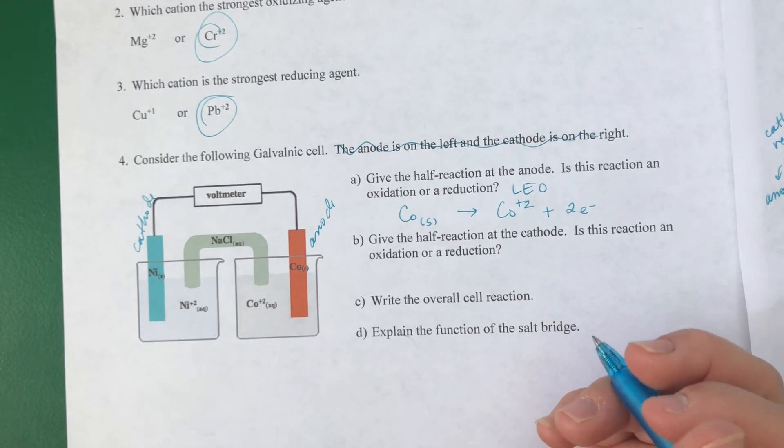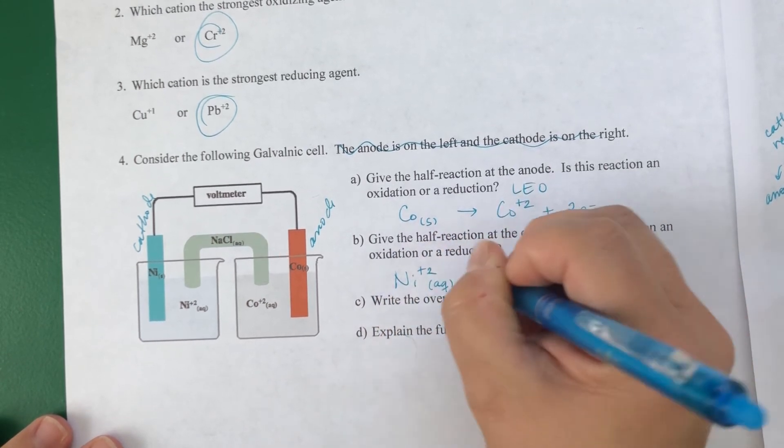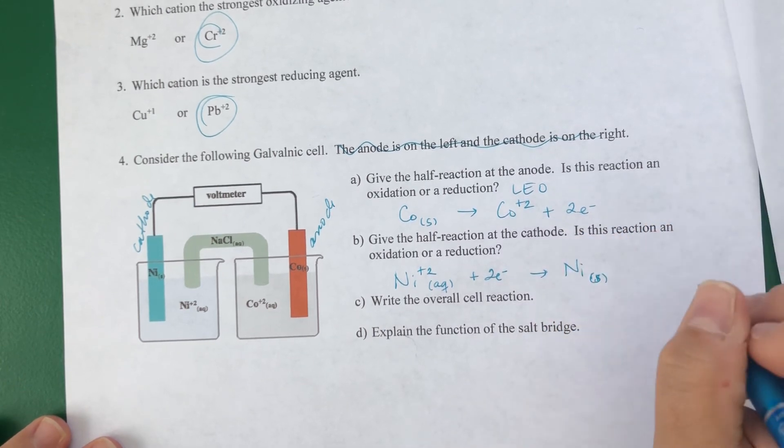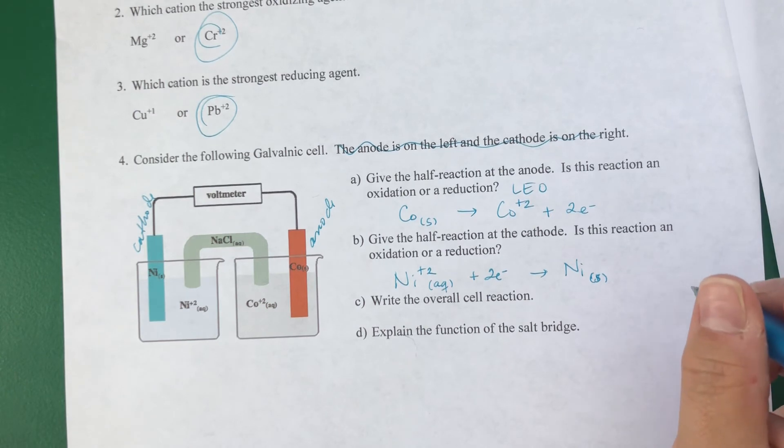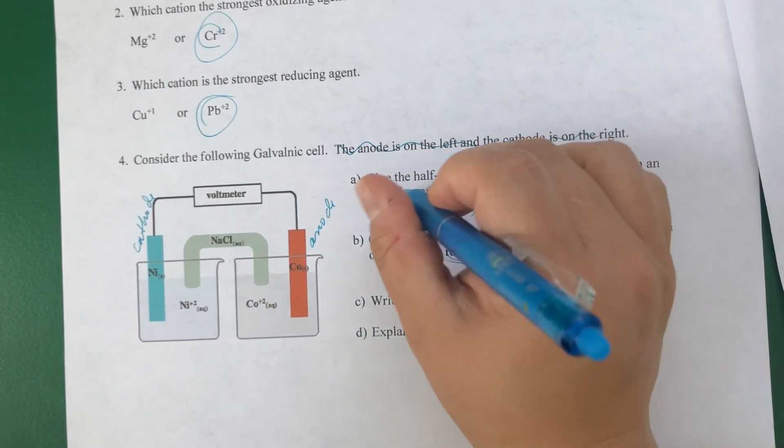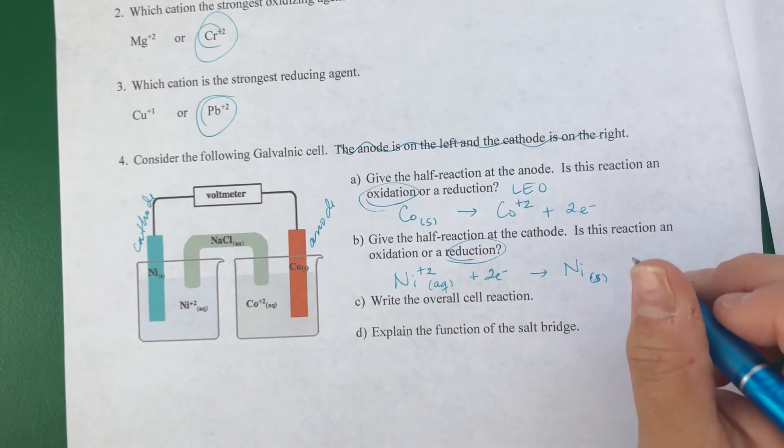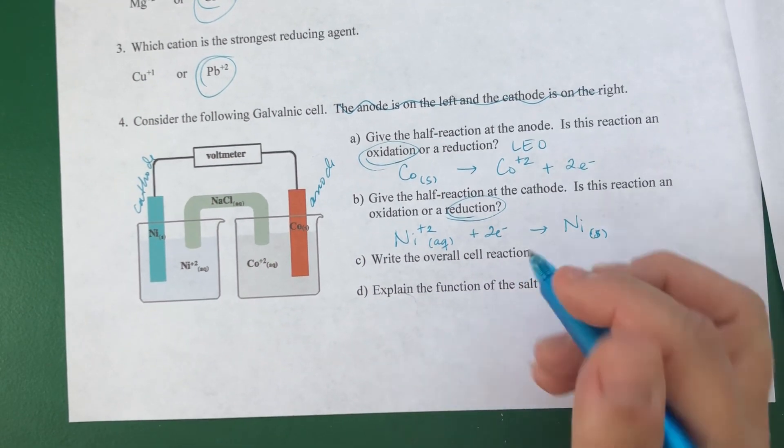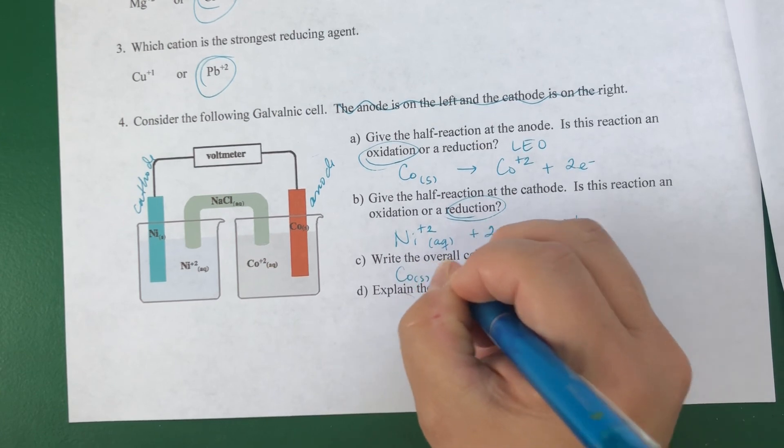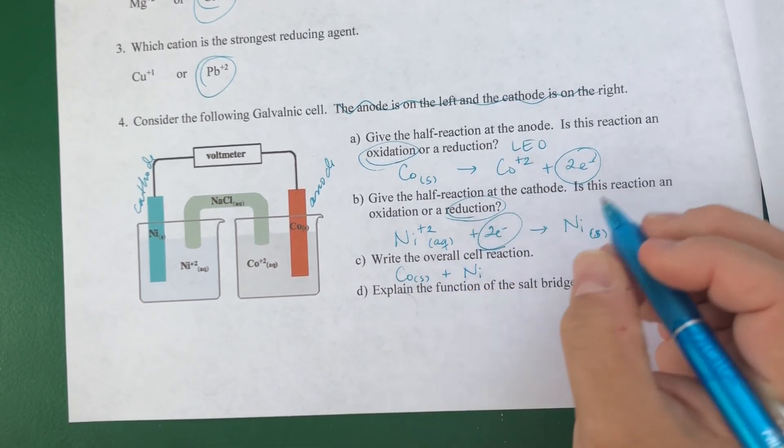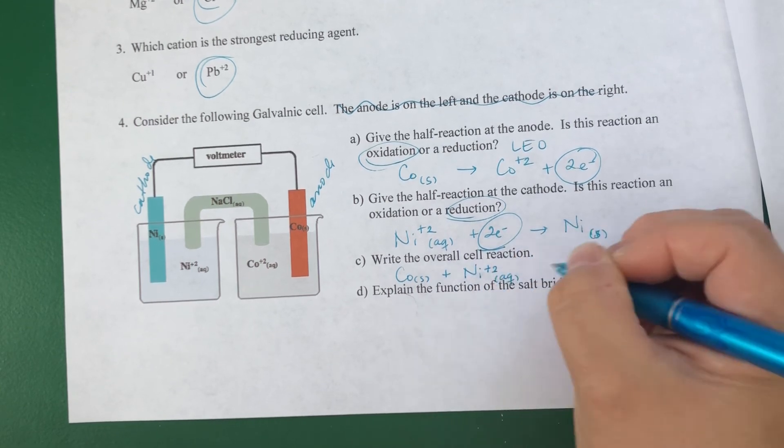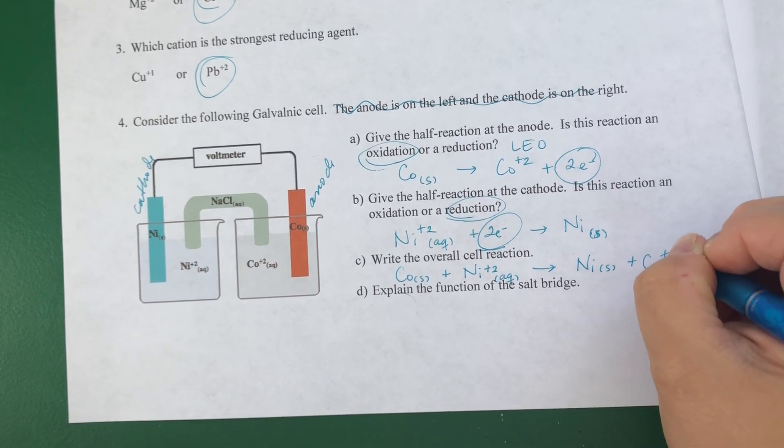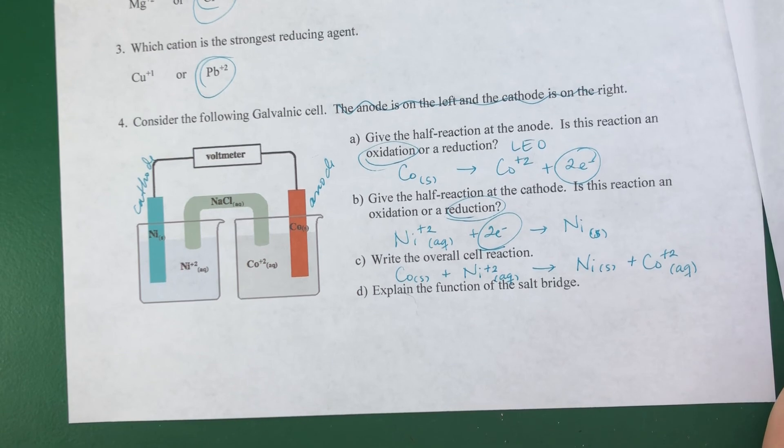Give the half reaction at the cathode, so the cathode's going to start with the ion, Ni²⁺ plus two electrons to produce nickel metal. That's the cathode. Cathode is the reduction, and the anode is the oxidation. Write the overall cell reaction. So I'm not asking for cell potential, I'm asking for the reaction. So the reaction is cobalt and nickel 2+, and they're balanced because you have two electrons and two electrons, producing nickel and cobalt 2+. And that's your reaction, your whole cell reaction.